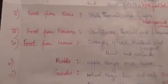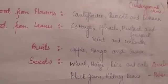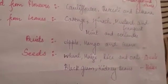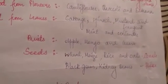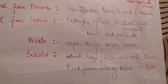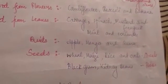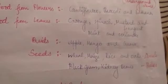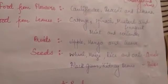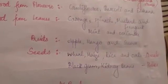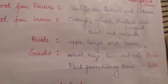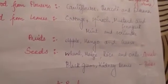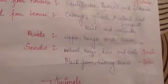Next comes food from fruits: guava, mango and apple. Next is seeds, where we have two categories — cereals and pulses. Cereals include oats, millets, wheat and rice, whereas kidney beans and black gram are pulses. So to recap: maize, wheat, rice and oats are cereals, whereas black gram and kidney beans are pulses.